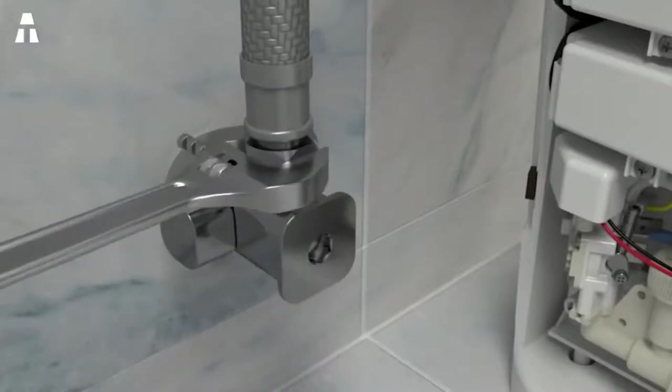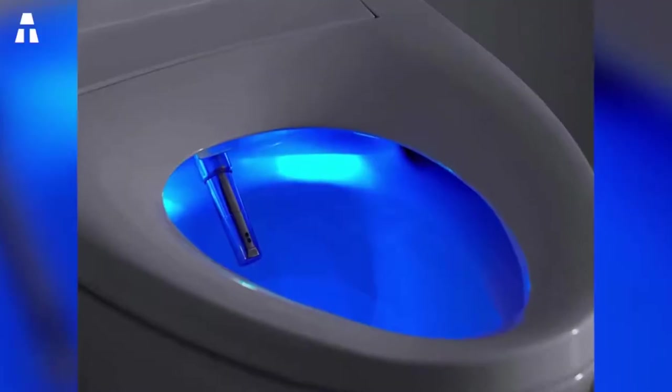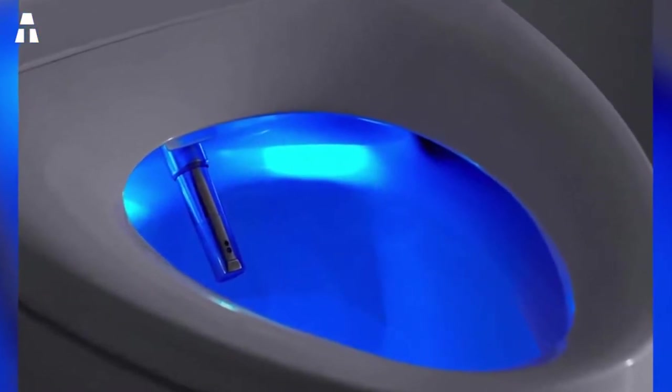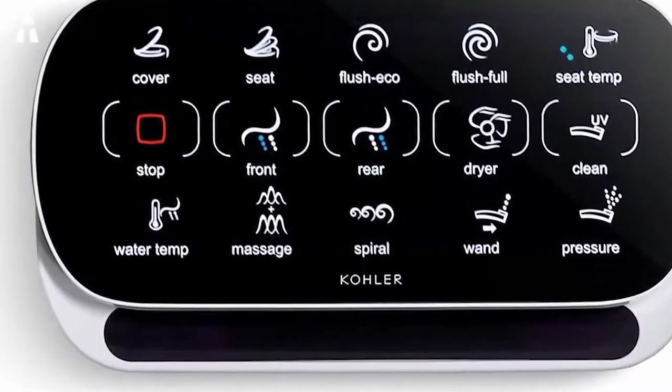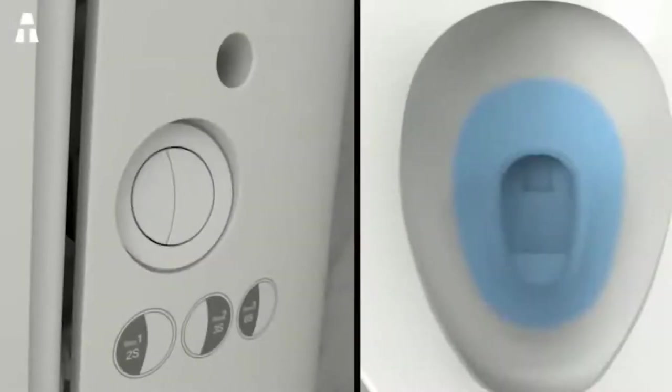The toilet seat is heated and the temperature can be adjusted. The LED light illuminates the bowl to act as a night light, so you don't even have to turn on the light when you want to go to sleep. An LCD touchscreen remote control is supplied with the toilet to access all settings.